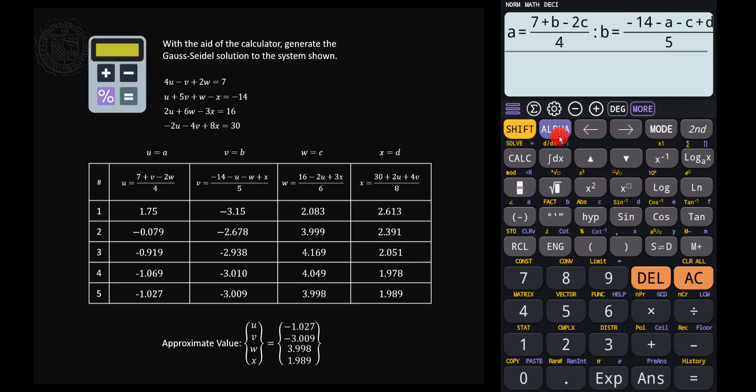And then assign again the colon function or key. Then let's input the equation w. So we have w is equal to c, so alpha c is equal to 16 minus 2 times u but u is equal to a plus 3 times x and x is equal to d, all over 6.